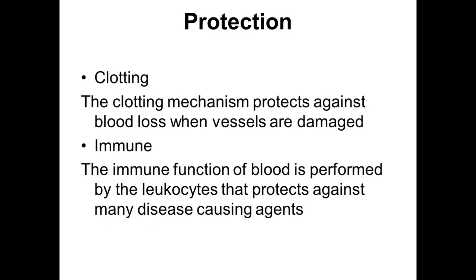Now we look at protection as a function of blood. Clotting: the clotting mechanism protects against blood loss when vessels are damaged — platelets are the main cells that help in the clotting mechanism. Immune: the immune function of blood is performed by leukocytes, which protect against many disease-causing agents.